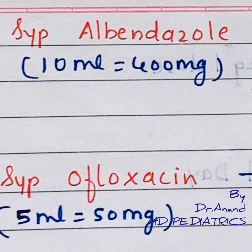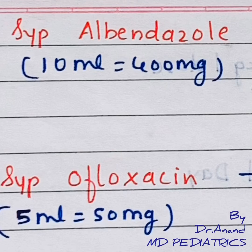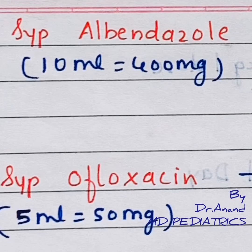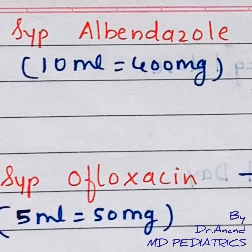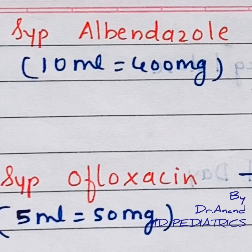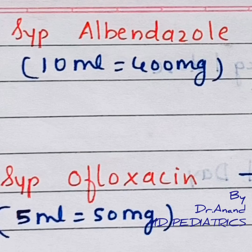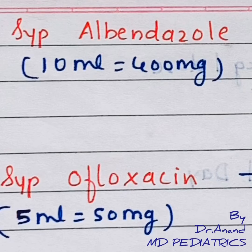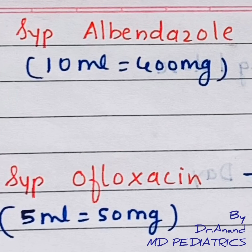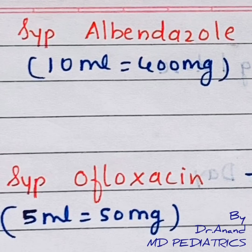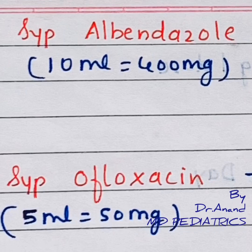For ascaris, hookworms, and whipworms, I have already told you the dose. Albendazole comes as a 400mg tablet, 200mg per 5ml syrup, and also in combination with ivermectin. Always remember to use this syrup carefully in patients with impaired hepatic function and decreased TLC counts.